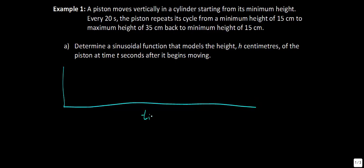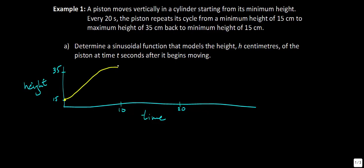Time is measured on the horizontal axis and height on the vertical axis. The period is 20 seconds, so we mark 10 and 20 seconds. The minimum height is 15 cm and the maximum is 35 cm. At time 0 it's at 15, at time 10 seconds it reaches the maximum of 35, then comes back down to 15 at 20 seconds, and the cycle continues.